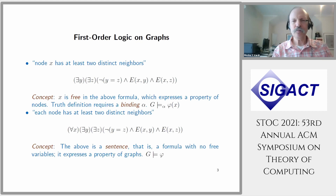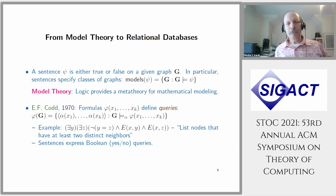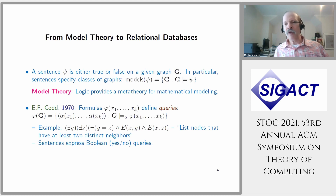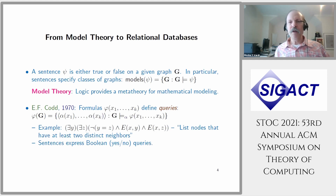This is first-order logic on graphs. Model theory talks about a sentence satisfying or not satisfying a graph — the set of models of a given size, or graphs satisfying the sentence. Logic gives us a way to describe classes of graphs or classes of mathematical structures, and model theory, which is part of mathematical logic, is the meta-theory studying the modeling power of logic.